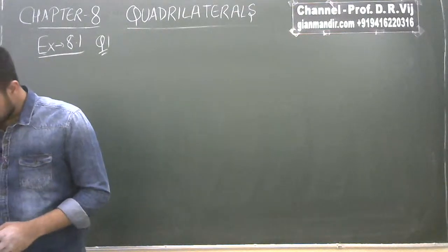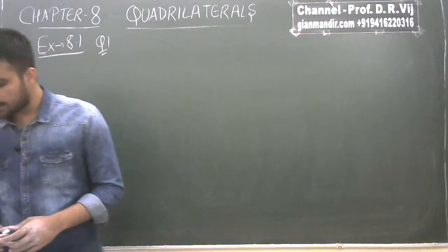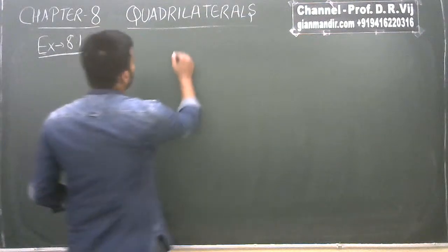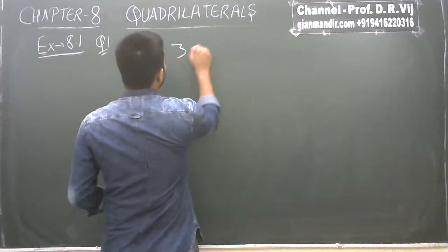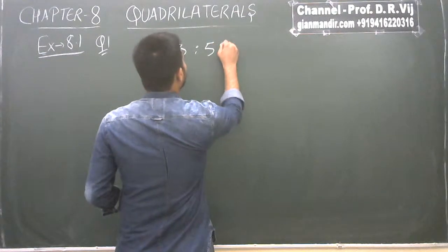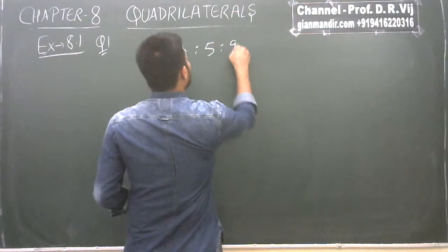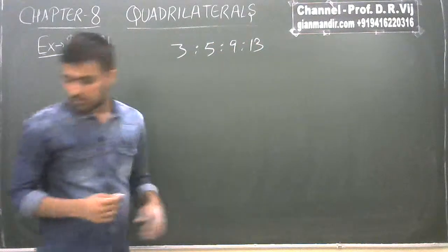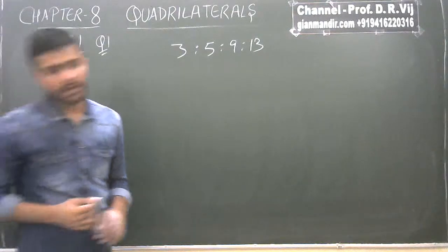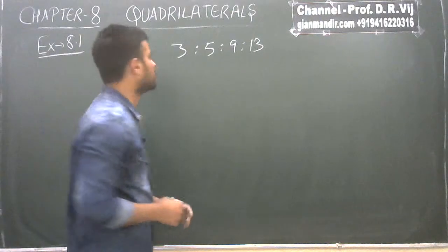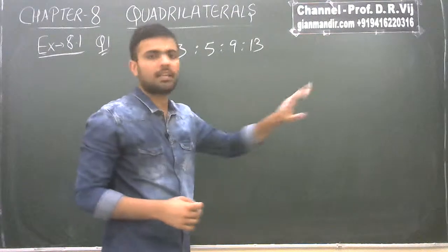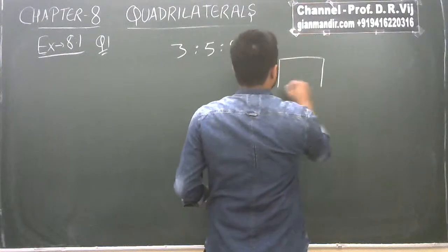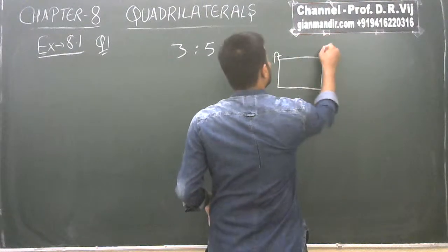Question number one is: angles of a quadrilateral are in the ratio 3:5:9:13. They are asking us to find all the angles of this quadrilateral. We have been given the ratios of all the angles of the quadrilateral.